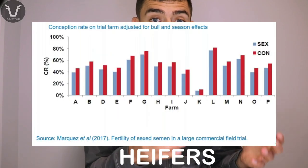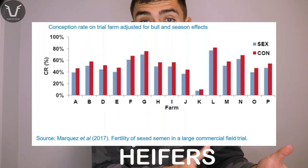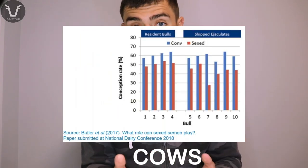Other factors that seem to affect the gap between conventional and sexed semen include cow parity — the gap seems to be narrower in heifers versus cows — different bulls seem to perform differently when sexed, and there are differences between fresh and frozen sexed semen.